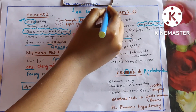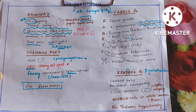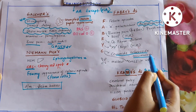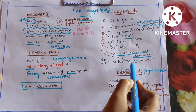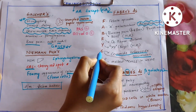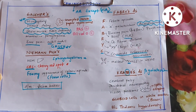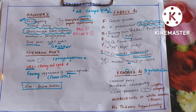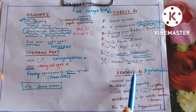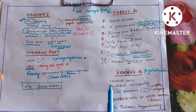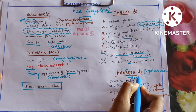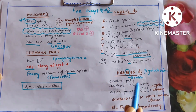Same way in mucopolysaccharidosis everything was autosomal recessive except Hunter's, which is X-linked recessive. In Fabry's there is an accumulation of ceramide trihexoside, and C for cross — that is Maltese cross appearance in the urine. This completes Fabry's disease.